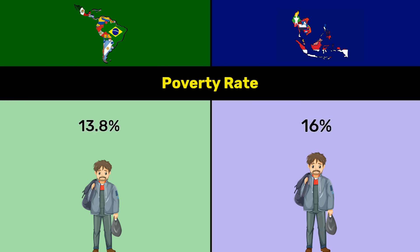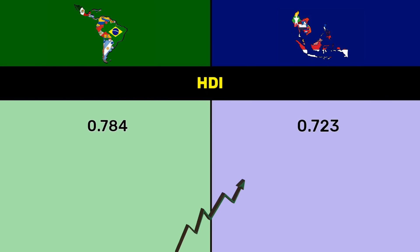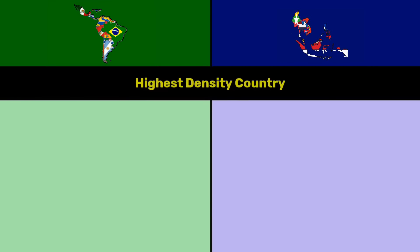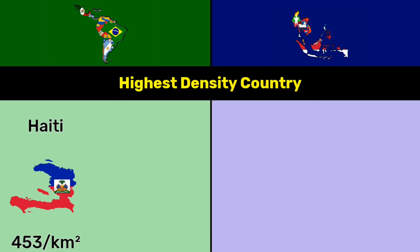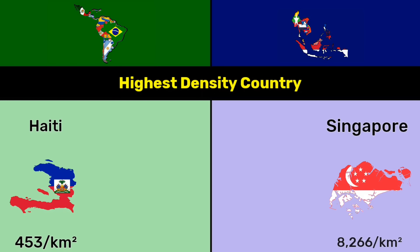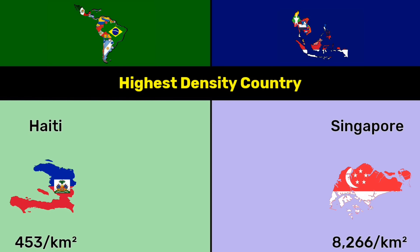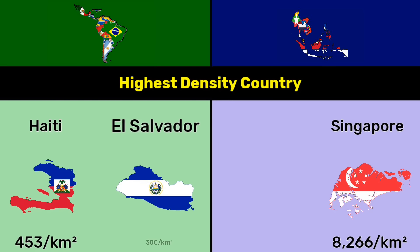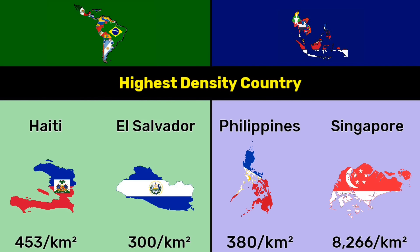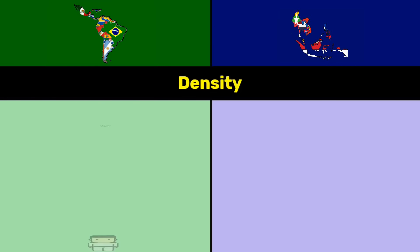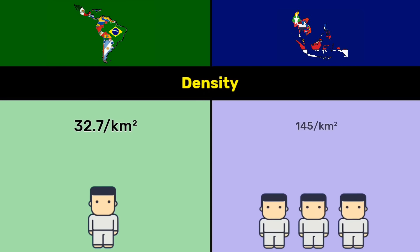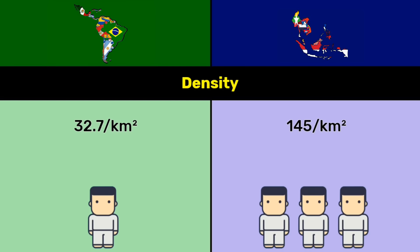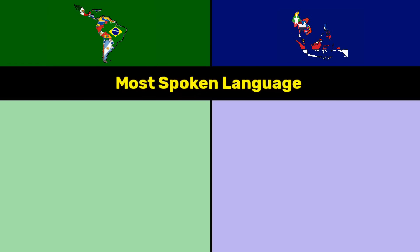Poverty rate: 13.8 percentage for Latin America versus 16 percentage for Southeast Asia. HDI: 0.784 versus 0.723 — both are high. Highest density country: Haiti 453 per square kilometer and Singapore 8,266 per square kilometer; El Salvador 300 per square kilometer and Philippines 380 per square kilometer. Overall density: 32.7 per square kilometer versus 145 per square kilometer.